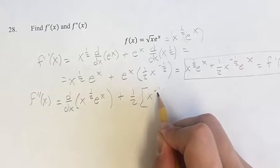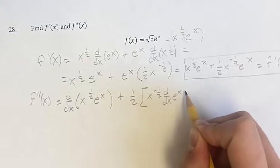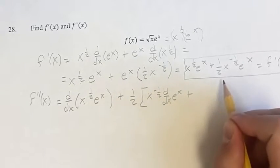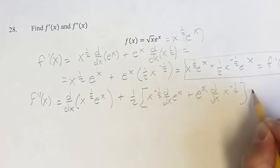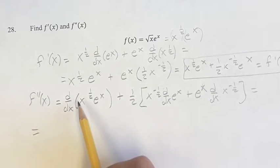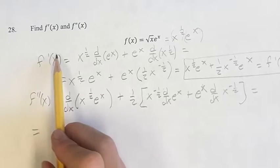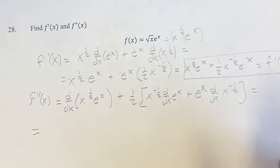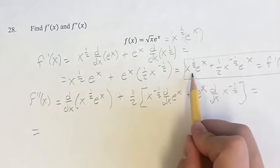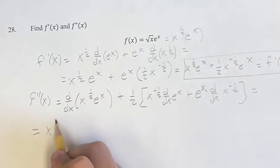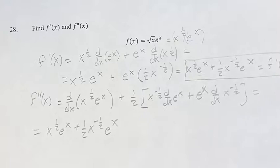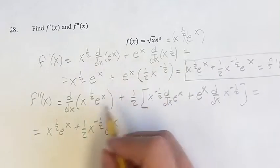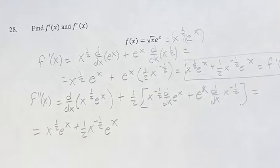For the second term, it'll be x to the negative 1/2 times the derivative of e to the x, plus e to the x times the derivative of x to the negative 1/2. For the first term, the derivative of x to the 1/2 times e to the x — where have we done that before? That's actually just the first derivative again. We've already calculated it to be x to the 1/2 e to the x plus 1/2 x to the negative 1/2 e to the x. We can just plug that in — that's our first term.